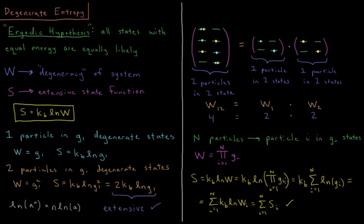But the natural log of a bunch of products, so the natural log of a times b times c, is the natural log of a plus the natural log of b plus the natural log of c.